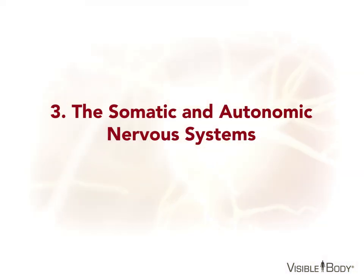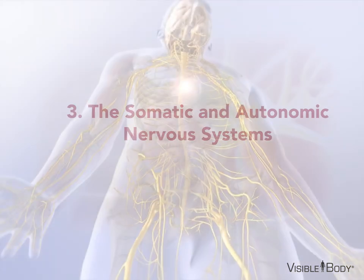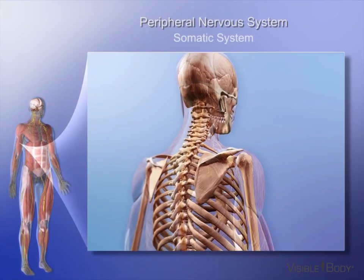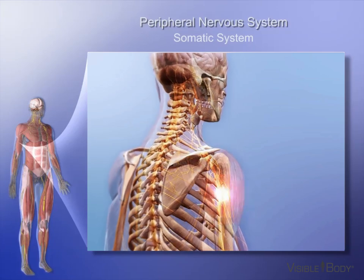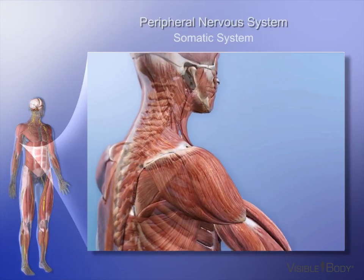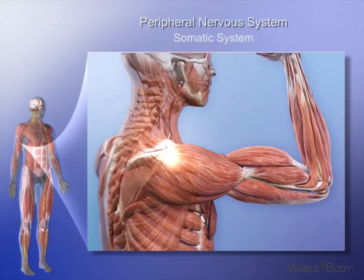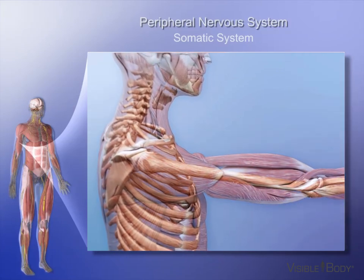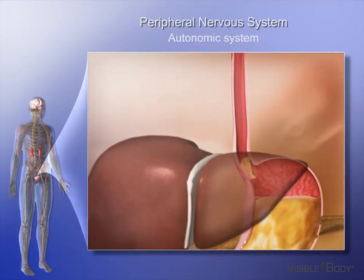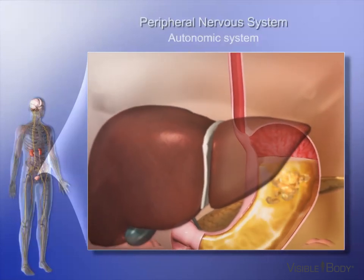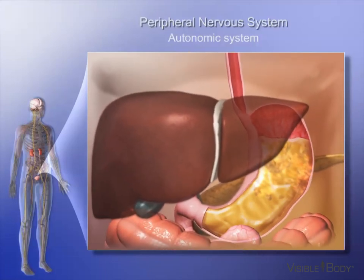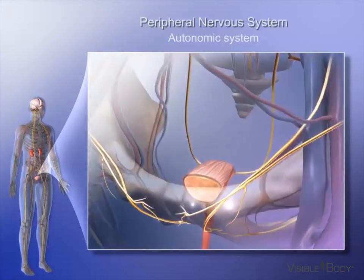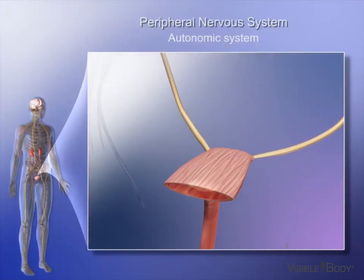Part 3: The Somatic and Autonomic Nervous Systems. Some motor neurons are connected to skeletal muscles that are under voluntary control. You can decide whether or not to stand up, shake your head, or laugh. These motor neurons are called somatic motor neurons, and together they make up the somatic nervous system, or SNS. Other bodily functions, such as insulin secretion, stomach movement, or sweating, are not voluntary. Organs or functions that work without you thinking about them are controlled by the autonomic motor neurons.